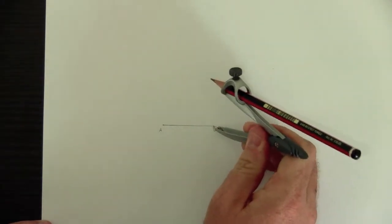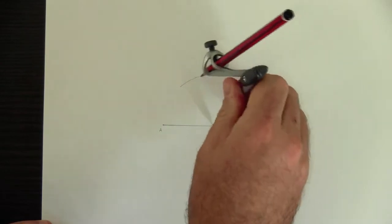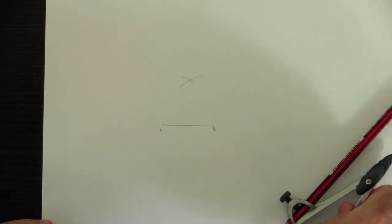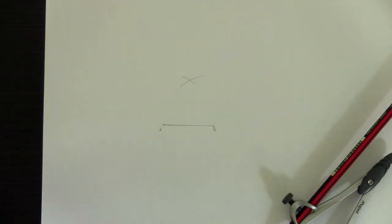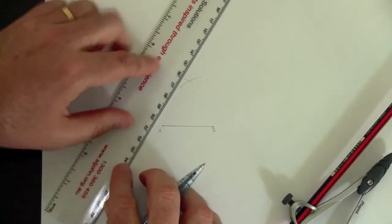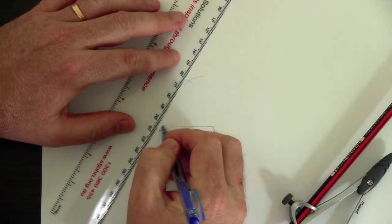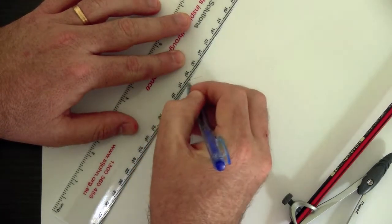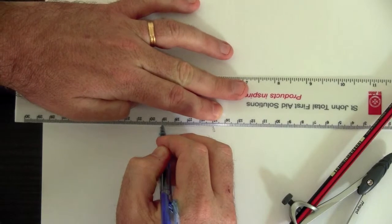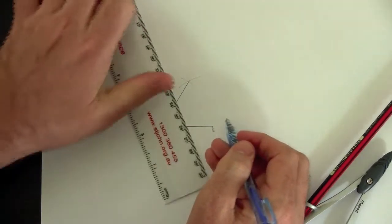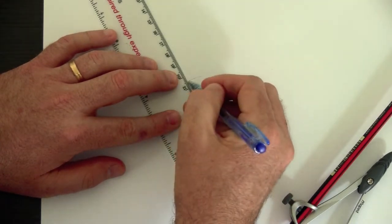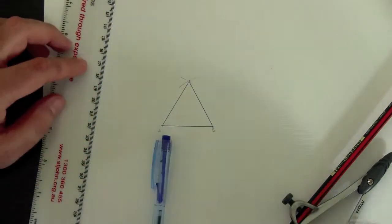And we put the point on one end of the line, draw a little arc. Put the point on the other end of the line, and draw a little arc. And that new point that we've got, that's going to be the third point of the triangle. So if we join these three points together... Voila! An equilateral triangle.